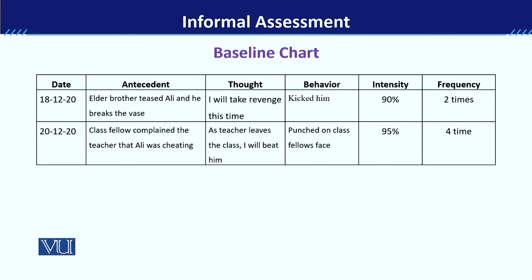Baseline chart introduce کرتے وقت سب سے پہلے parents کو کہنا ہے کہ وہ date لکھیں جس date کو behavior occur ہوا۔ اس کے بعد antecedent factor - یعنی behavior ہونے سے پہلے کیا ہو رہا تھا۔ For example علی کے بھائی نے اسے tease کیا۔ پھر اس وقت علی کا thought pattern - اس نے سوچا کہ 'I will take revenge this time'۔ اور پھر behavior کیا تھا - وہ kicked۔